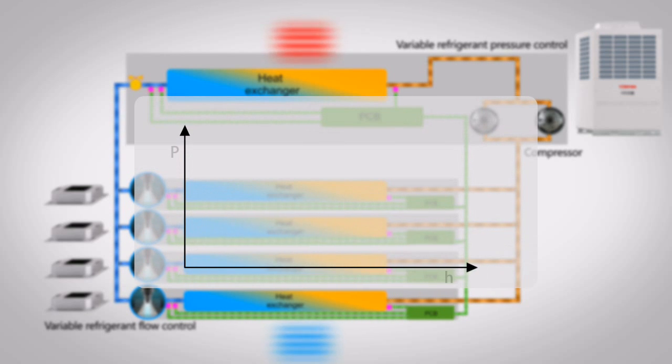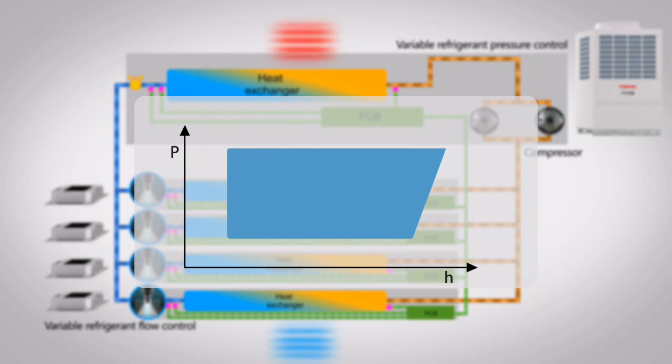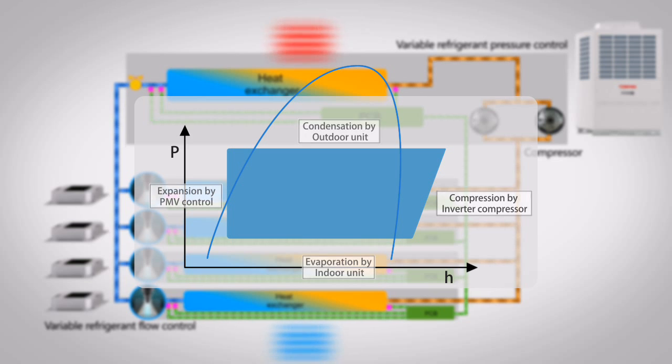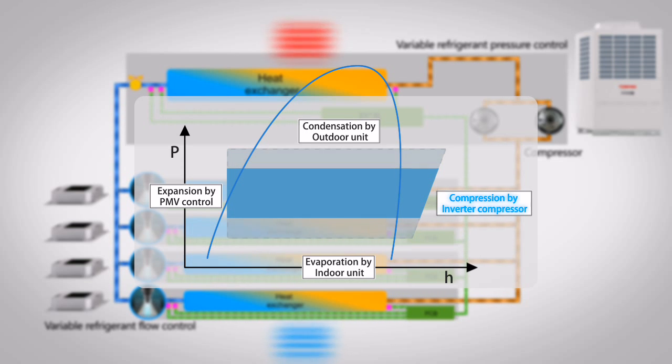The outdoor unit controls refrigerant pressure through variable compression and refrigerant flow division, whilst refrigerant flow volume control can smoothly respond to the fluctuating capacity demands of the indoor unit. The appropriate adjustment of the refrigerant pressure and flow volume allows the system to minimize waste factors and energy losses.